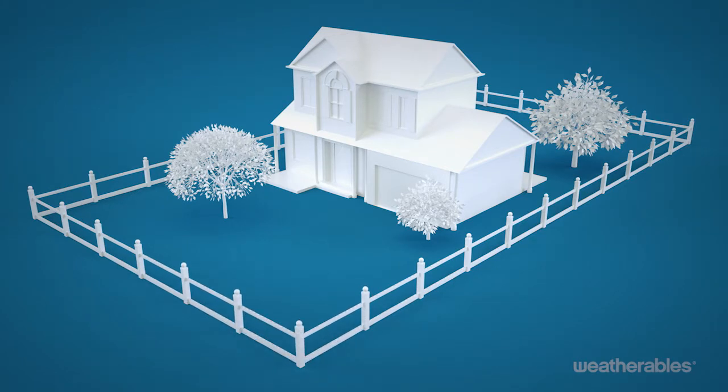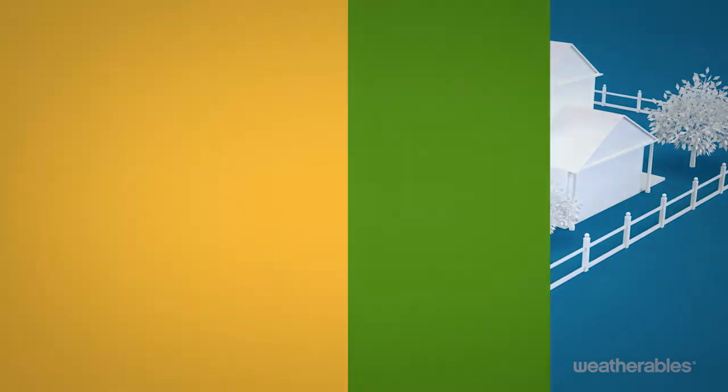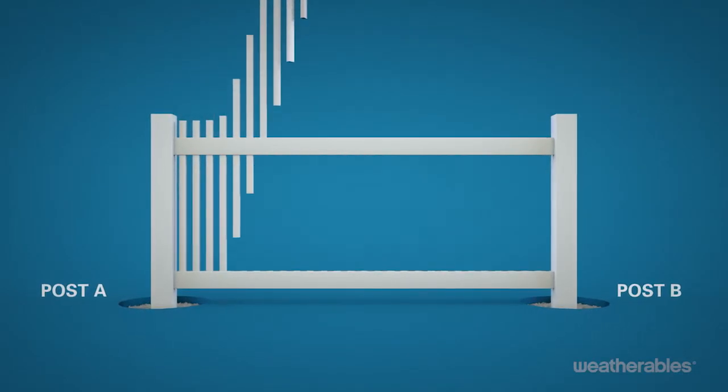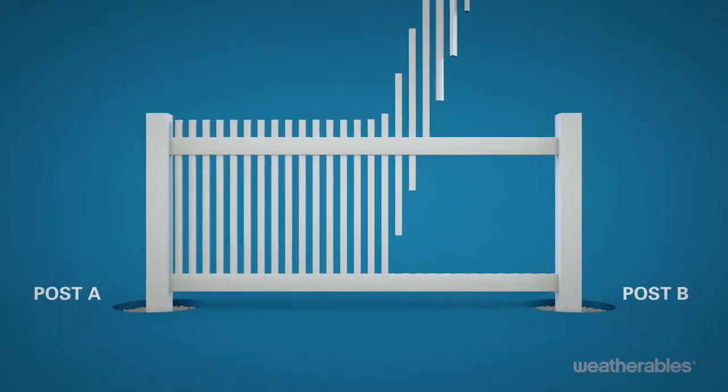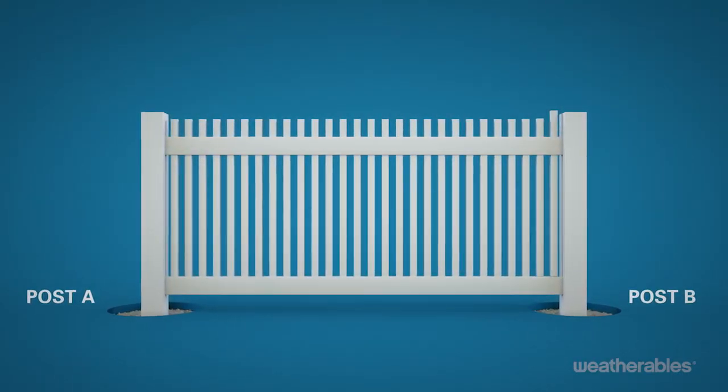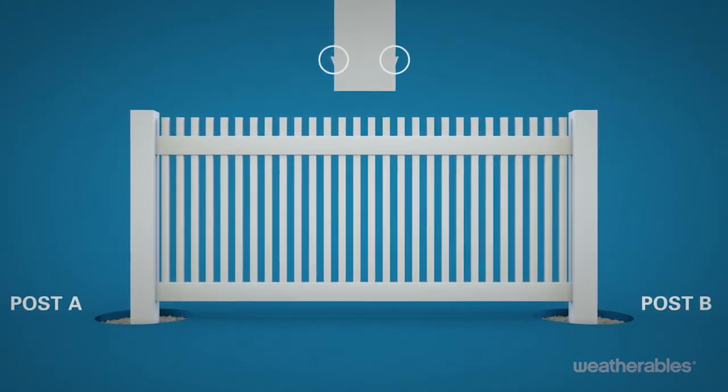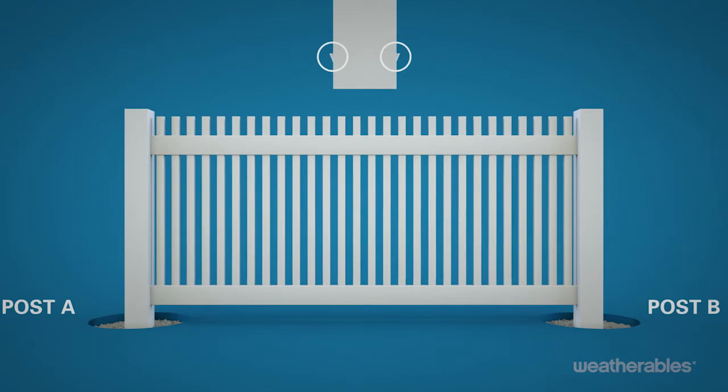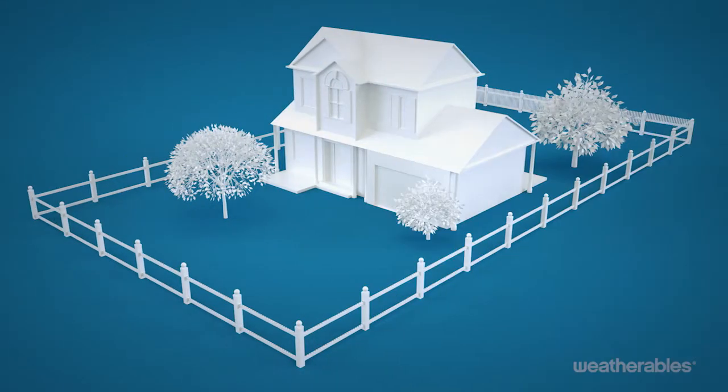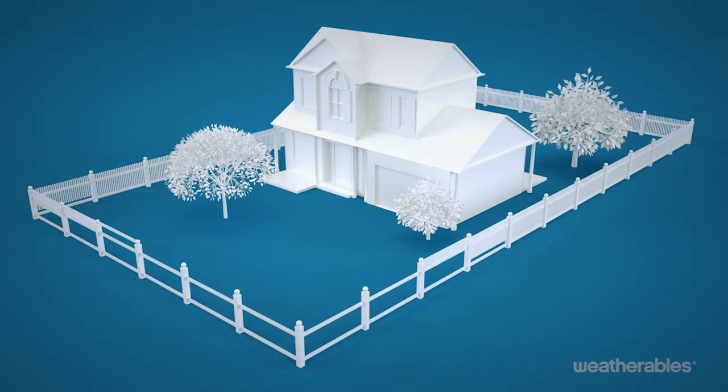Once all of the posts and rails are in place, it's time to insert the pickets. Insert the pickets with the notch side down through the routed holes in the top rail and into the bottom rail. The notches at the end of each picket will allow the picket to lock securely into the rail. Continue inserting pickets into all additional panels.